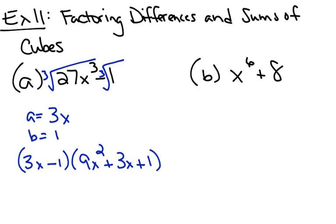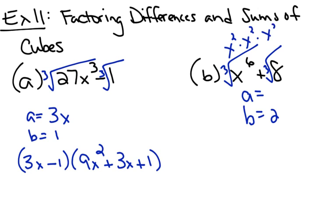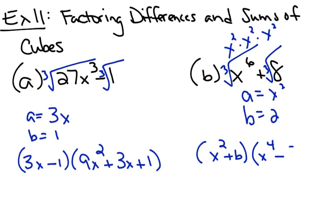That one wasn't bad. It's the second example you may not recognize as a cube. 8 is easy — the cube root of 8 is 2. But what's the cube root of x to the sixth? Well, x to the sixth is x squared times x squared times x squared, so a is x squared and b is 2. Since it's a sum, it's going to be a plus b, a squared minus ab plus b squared. That's why a squared gives x to the fourth — because x squared times x squared is x to the fourth — minus ab plus b squared.